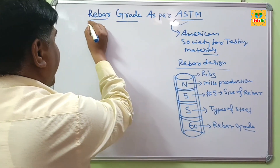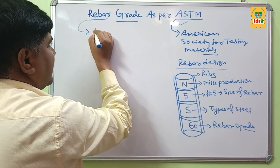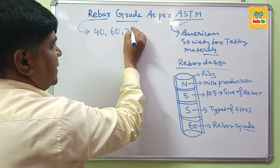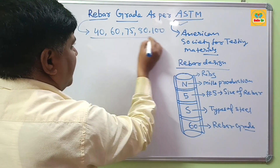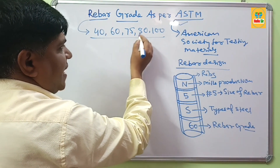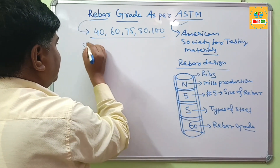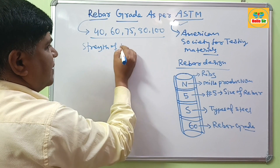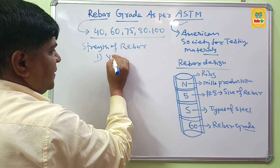As per ASTM, the different grades of rebar are 40, 60, 75, 80, and 100. How do we understand what 40, 60, 75, 80, and 100 mean? The strength of rebar is measured in two units.